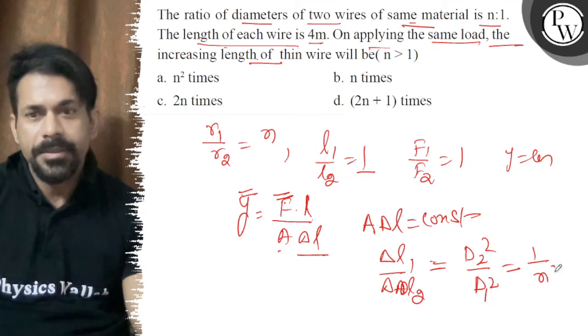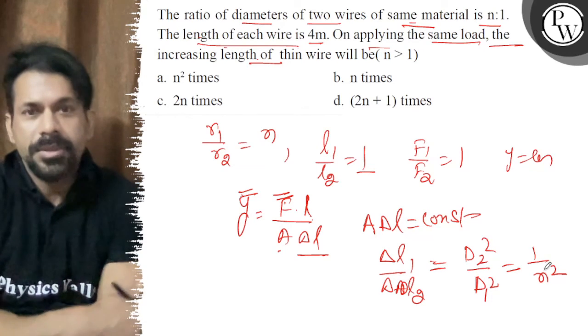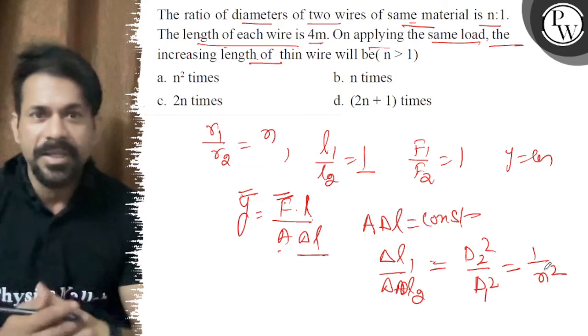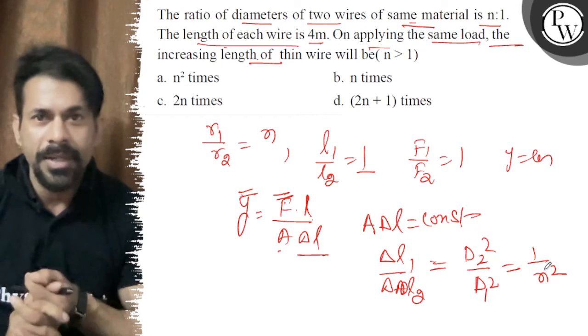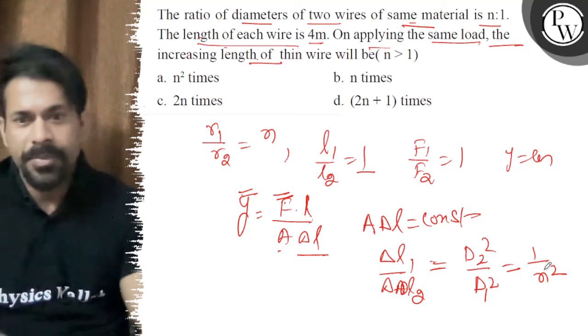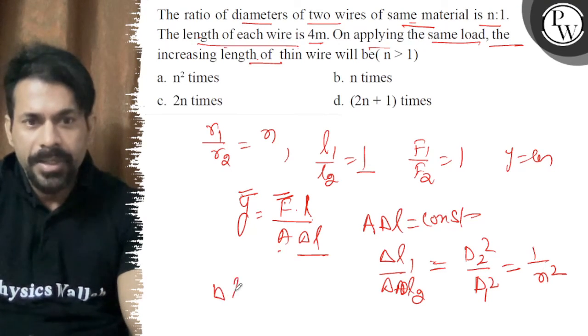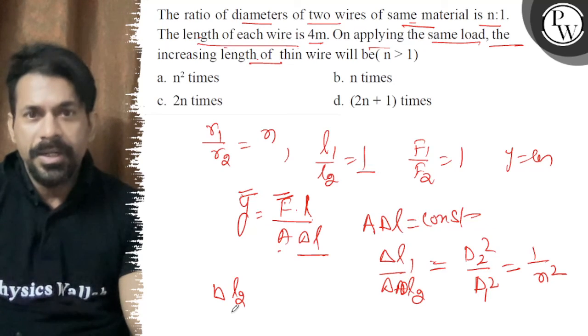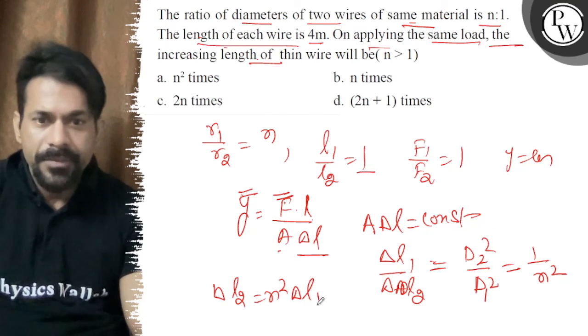So thin wire - on applying the same load, the increase in length of thin wire is... The thin wire is the thinner one. We need ΔL2, so ΔL2 = n²·ΔL1.